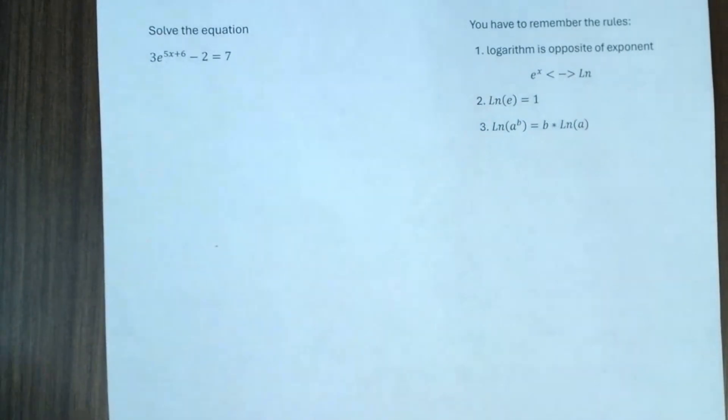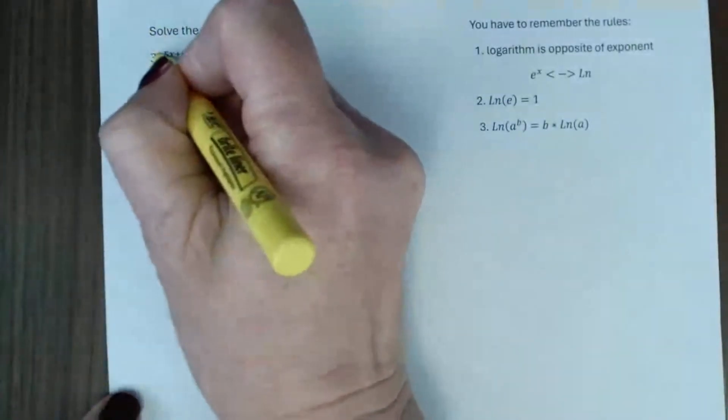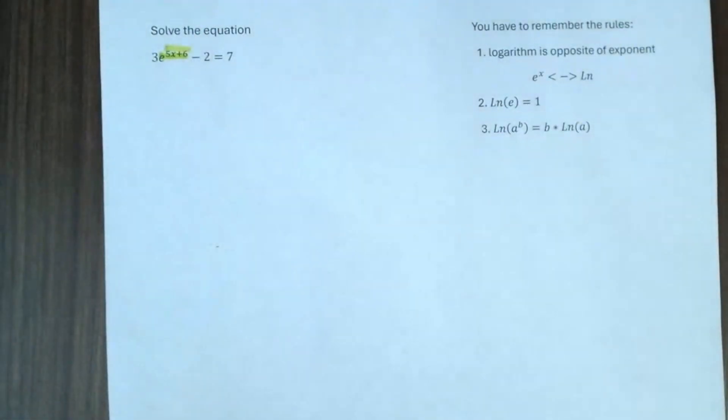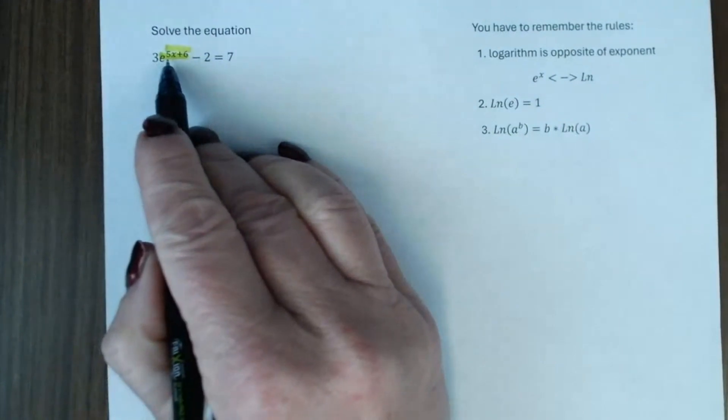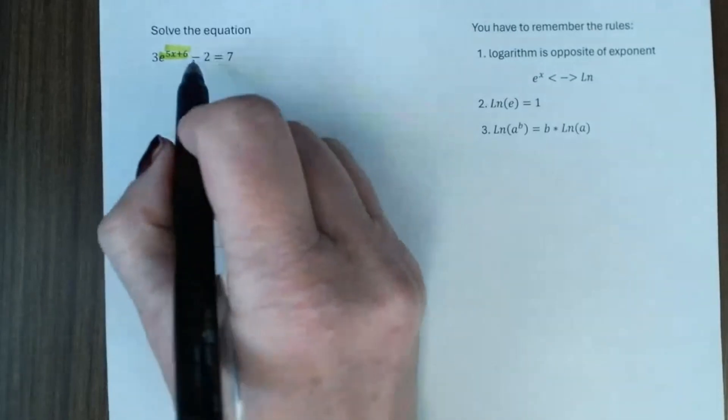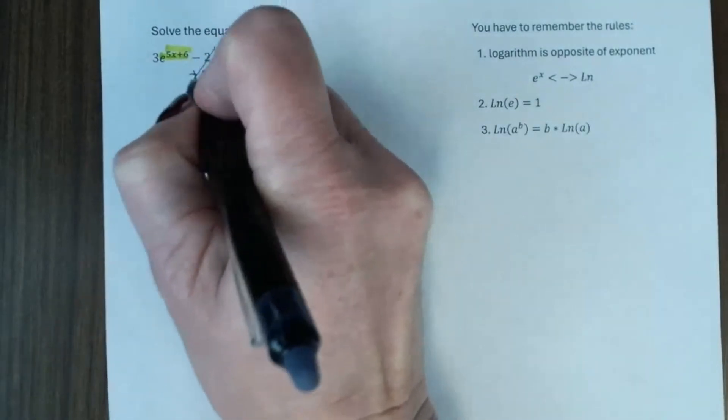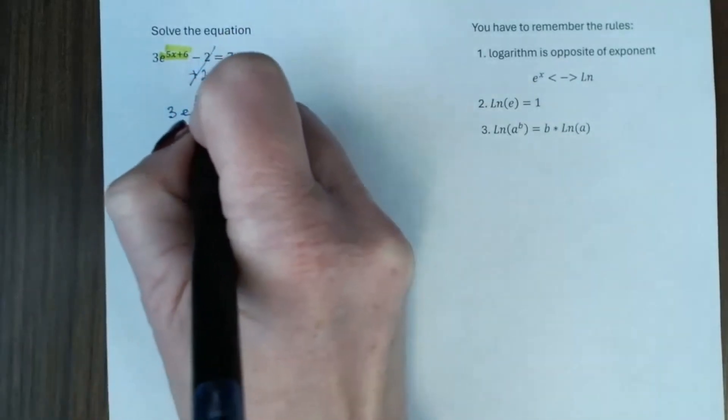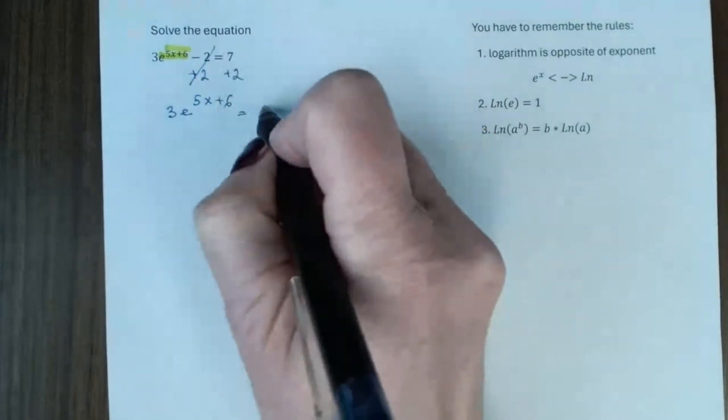So, to solve this equation, the main idea, we have to have the base to the exponent by itself on one side. We want to have e to the power of 5x plus 6 by itself on one side. First of all, we have to add 2 to both sides. And we will have 3e to the power of 5x plus 6. 7 plus 2 will give you 9.